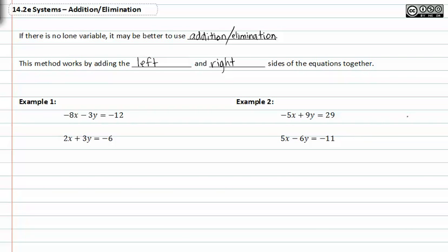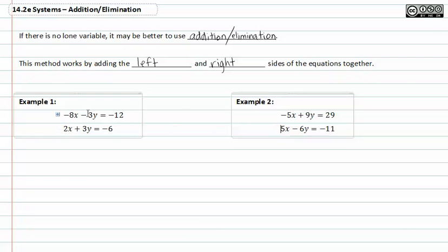In example one, we see that negative eight x minus three y equals negative twelve, and our second equation is two x plus three y equals negative six. If we think about this, we see that the three y's are opposite signs of each other, which would work beautifully for addition, since if we added them together they would drop out.